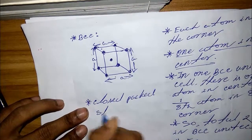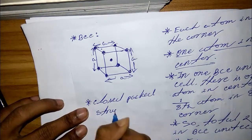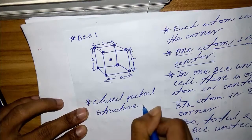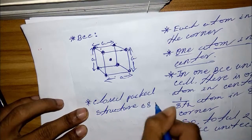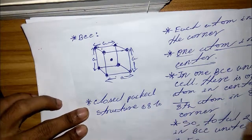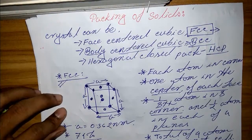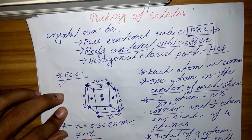BCC is a close-packed structure with a packing density of 68 percent, compared to FCC which has a packing density of 74 percent.